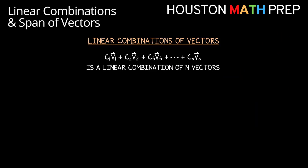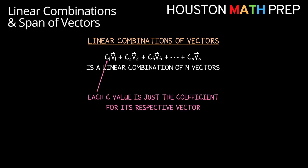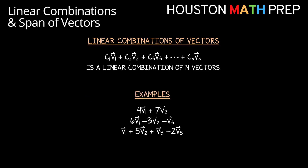A linear combination of vectors is a sum of a collection of vectors, each with a coefficient — when it comes to vectors we call these scalar multiples, or sometimes the weight of that vector in the linear combination. For example: four copies of v1 plus seven copies of v2; or six copies of v1 minus three copies of v2 minus one copy of v3. In a case where a term is missing — say there's no v4 term among five vectors — that vector simply has a coefficient of zero in the linear combination.